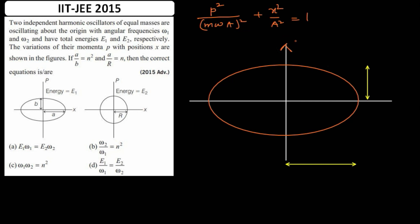For this ellipse, the semi-major axis along the p-axis has length equal to the maximum magnitude of momentum, which is mωA. The semi-minor axis along the x-axis is the amplitude A. Let's now compare these two diagrams with our findings.